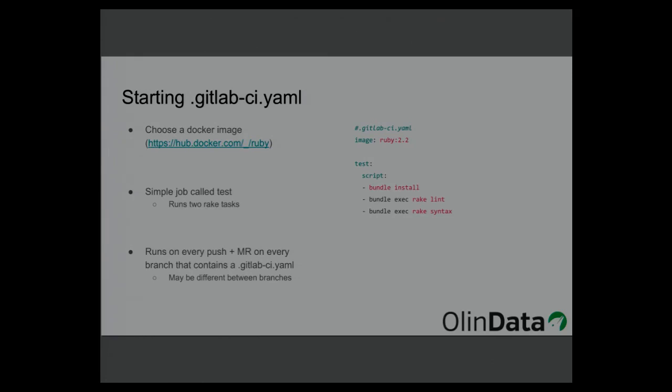Once you've checked this into your repository, from that moment on, for every push to the branch that has this file, it'll run your build. For every merge request it will also run. Be aware that your GitLab CI config can be different between branches — you'll notice this when you make changes to the file and have it sitting in a topic branch first. Until that branch is merged, you have two different GitLab CI files, so be aware of what's actually running.